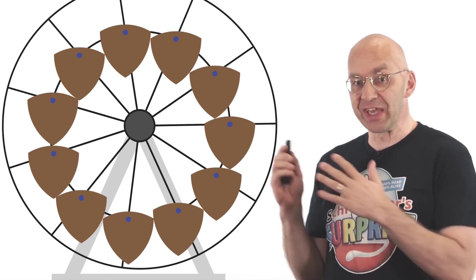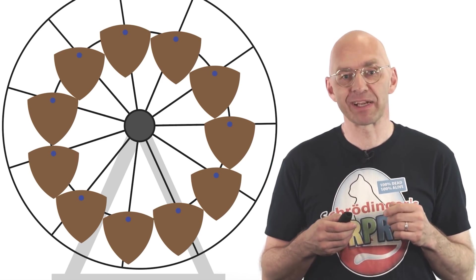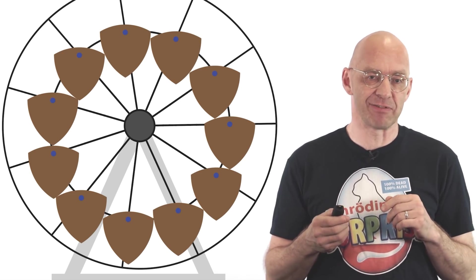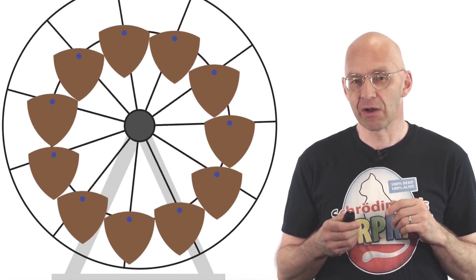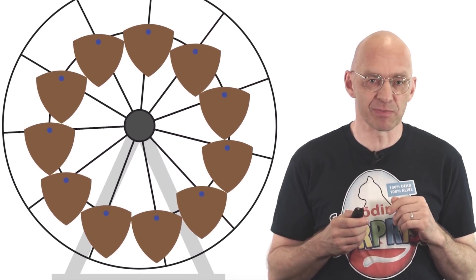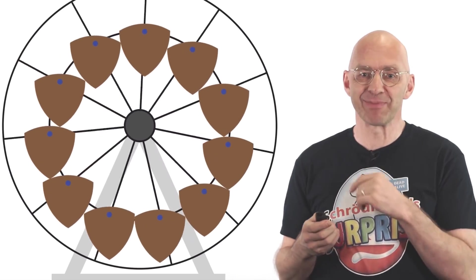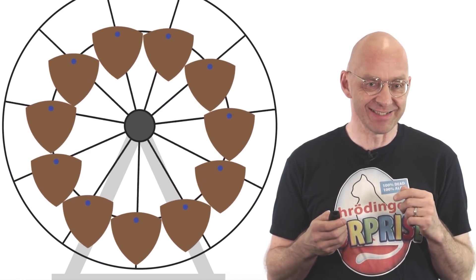Welcome to another Mathologer video. This is a special mathematical Ferris wheel, a geometrical gem that has only recently been discovered. Notice how the cabins of the Ferris wheel always just touch and brush along their neighbors. Pretty mesmerizing and impossible looking, isn't it?